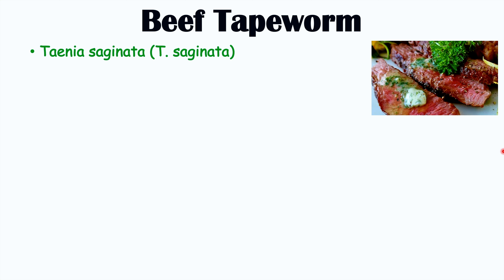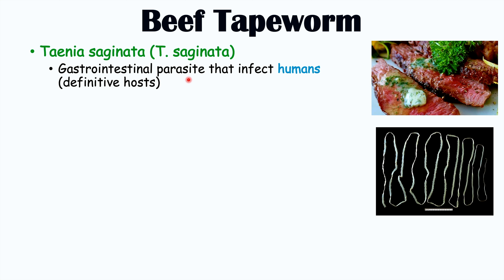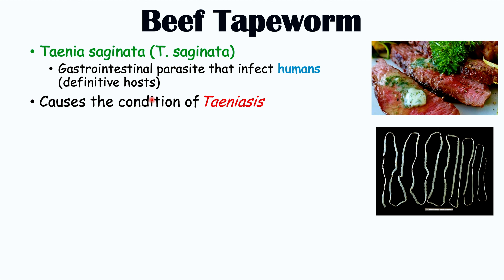There are many different species of tapeworm that can infect humans. One species in particular can infect humans from beef products, and that species is known as Taenia saginata, or T. saginata — the beef tapeworm. Like other tapeworms, it is flat in appearance, so it can actually look like a piece of tape. It is a gastrointestinal parasite that resides in the patient's small intestine, absorbs nutrients from the patient, and humans are the definitive host. Having an infection with this particular tapeworm causes the condition of taeniasis.